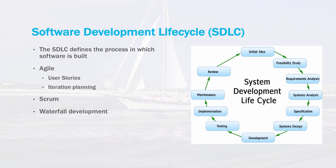The next area to understand is the software development lifecycle or SDLC. The SDLC process defines how software development teams produce working code. There are many different process models, with some of the more common methods being the Agile methodology, the Scrum methodology, and waterfall development. Many companies use their own proprietary model, but these are generally based on one of those methods. Programmers must be familiar with these processes as they define daily activities on the job.